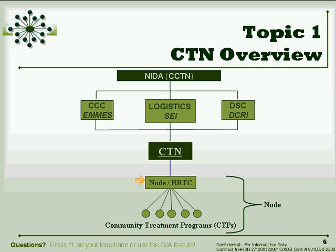The node typically employs researchers, data analysts, sometimes research assistants, study coordinators, and the like — typically employees of universities. Working within each node, conceptualized as the sites of these protocols, are the community treatment programs or CTPs. Each node is responsible for generating a cadre of community treatment programs representing different modalities — for example, residential treatment programs, opioid treatment programs, outpatient psychosocial programs, and detoxification programs — and those community treatment programs become the sites of these trials.